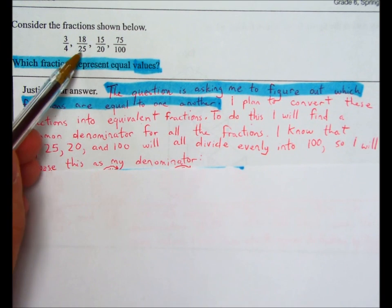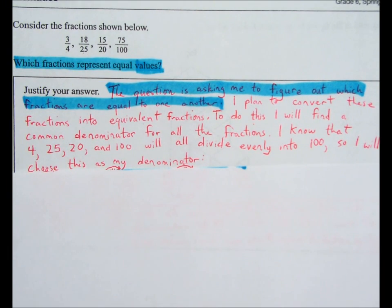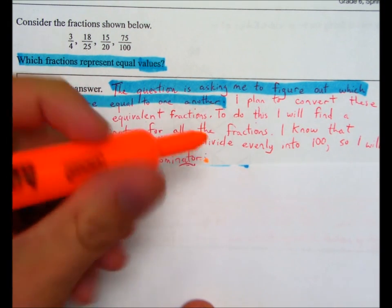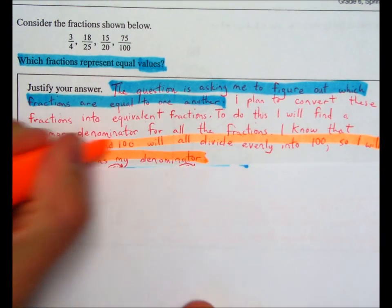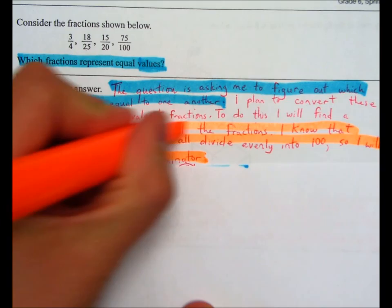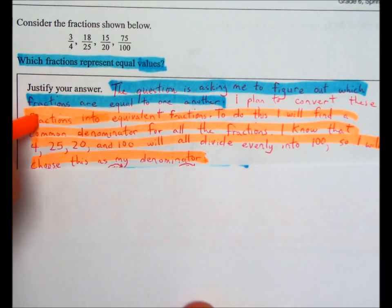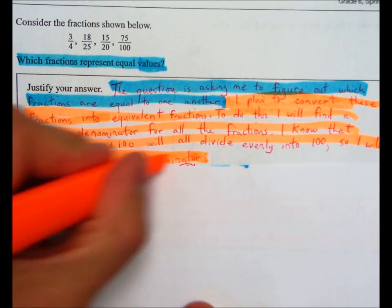So I will use that as my denominator. So that's my plan. So these numbers, 4, 25, 20, and 100, they will all divide evenly into 100. And so I'm going to highlight that part in orange. Hopefully it doesn't make the red too hard to see.